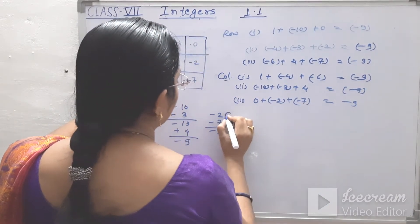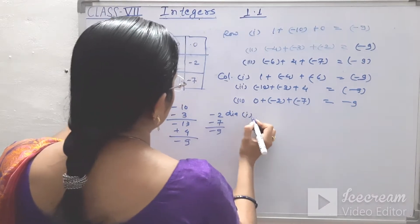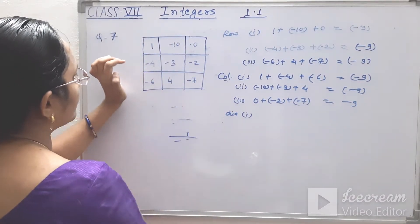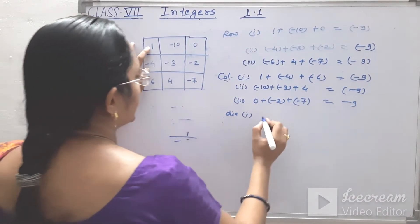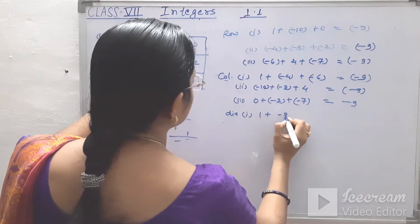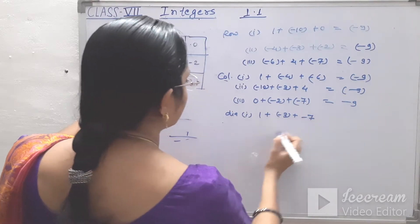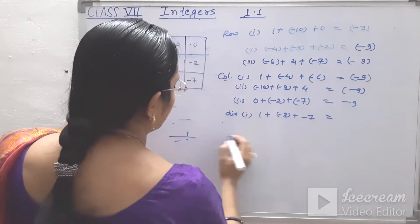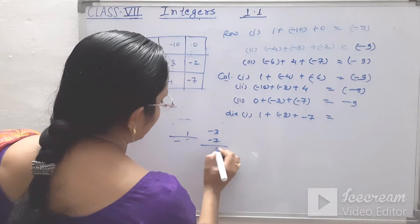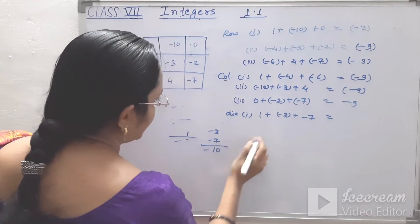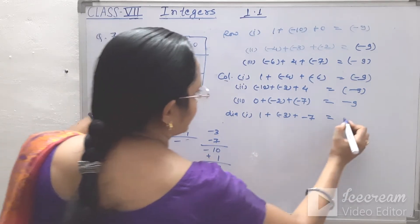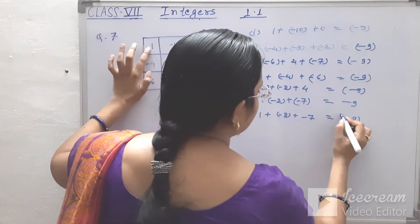First diagonal: 1 plus minus 3 plus minus 7. Minus 3 and minus 7 gives minus 10, and plus 1 — answer is minus 9.